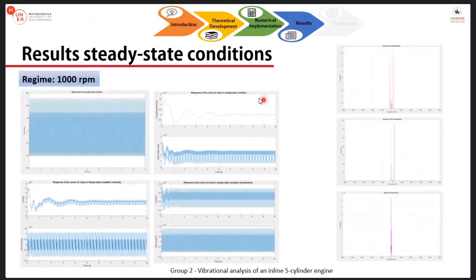The second very interesting regime is the idle, 1000 RPM, as I already mentioned. Exactly as I showed earlier, we have the time history here and the spectra with this symmetry in the right part of the slide.